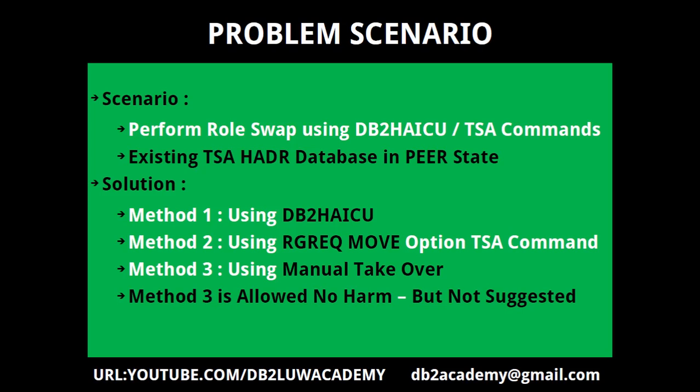The scenario is we want to perform a role swap using the db2 haiku utility or the TSA commands. The prerequisite is we need to have an existing TSA HADR database in peer state, which is very important. There are actually three methods. The first method is using the db2 haiku utility, which is the safer one. The second method is using the TSA RGREQ command — the resource group request command with the move option.